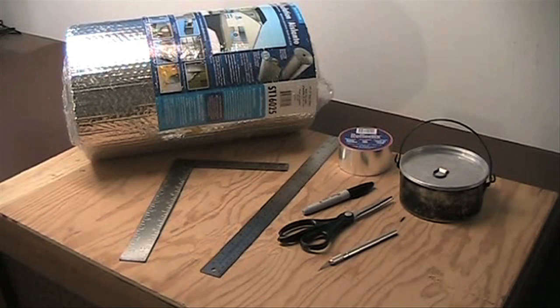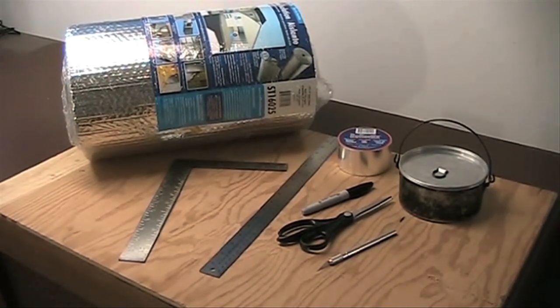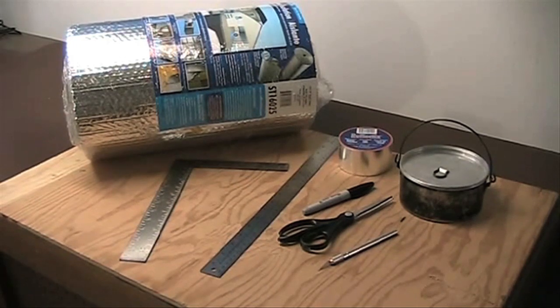Some Reflectix metal tape because duct tape will melt, it won't work. The Reflectix tape is 2 inches by 30 feet for about $3.50 at Lowe's.